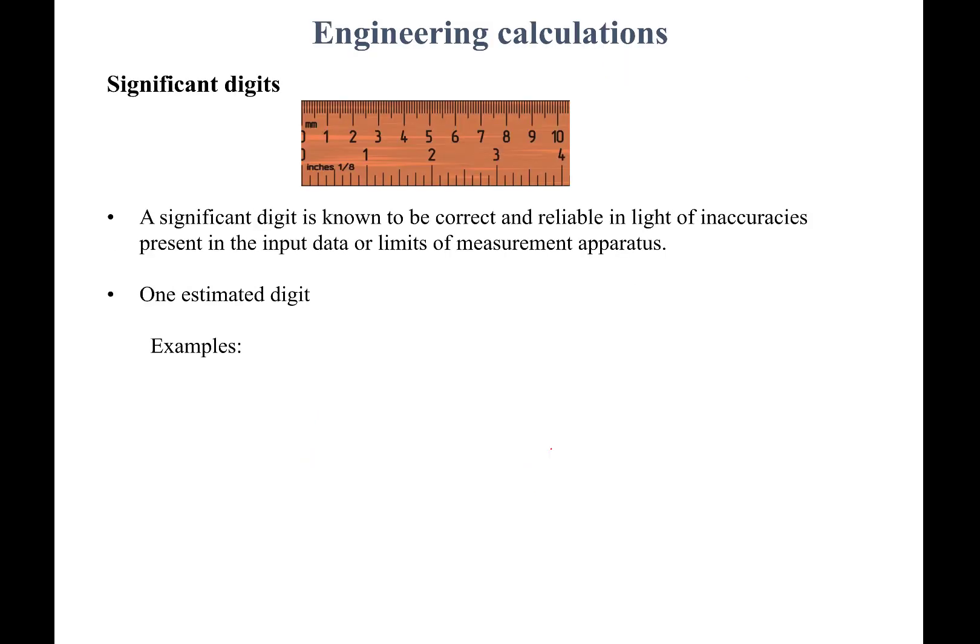The notion that relates to the quality of numbers is called significant digits. This is a tool created to measure the quality of a number — essentially telling you how many digits in a reported number would be reliable or correct, given all the limitations that exist in the input data or in your computation.